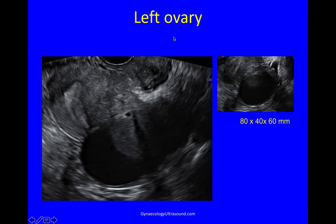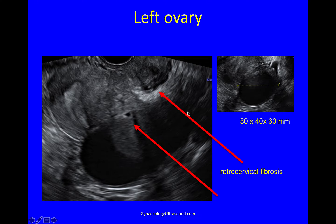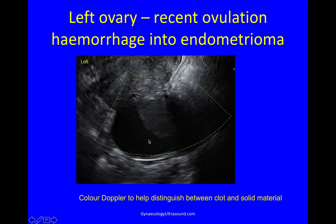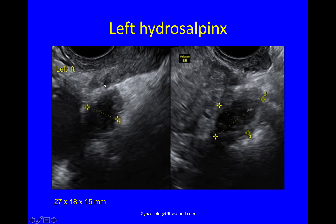Now we're looking for the left ovary. Here I am again in the anterior fornix with my retroflexed uterus and fibrosis here. You can see the ovary and the very first thing that strikes you is how low it is. It looks to be adherent to the back of the uterus and when we measure it, it's 80 by 40 by 60 millimetres. Looking at that ovary in more detail, there's an area you need to work out — is it solid or not? I've put colour Doppler on it. There's no vascularity. This is clot and she has just ovulated, so this is ovulatory haemorrhage into an endometrioma. And near that ovary there's also hydrosalpinx — bilateral hydrosalpinx.